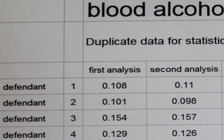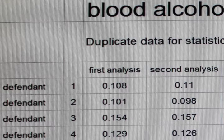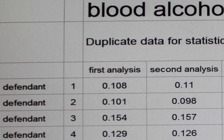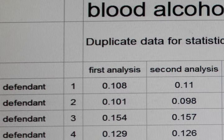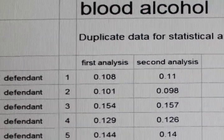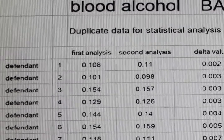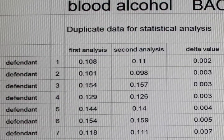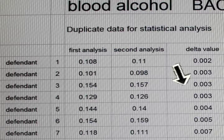How do we look at the errors? The standard approach is to run controls, look at the spread of the controls, and that will tell you what the errors are. But you can see the errors right in the duplicates. So let's add another column and call that column the delta, which would be the absolute difference between the first and the second one.